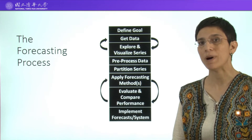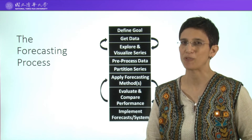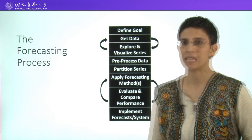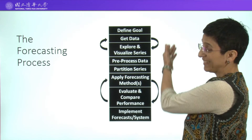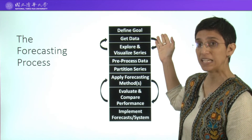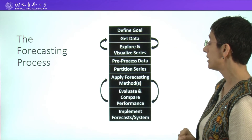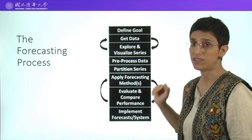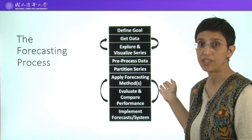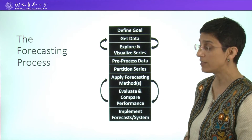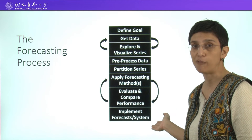Now let's talk for a minute about what a forecasting process is. Forecasting is not a function in a software or a button to run. It includes an entire set of steps, which are often not linear from start to end. It starts with defining a goal, getting the data, then exploring it and visualizing it. There are all kinds of pre-processing steps we'll talk about. Then we're going to apply different forecasting methods, compare them, evaluate them, finally choose one, and at the end we will be implementing some kind of a forecasting system.